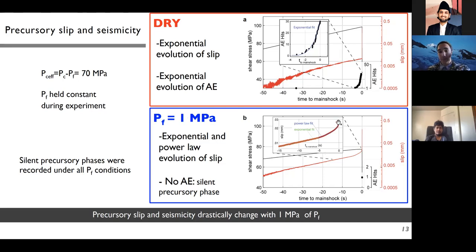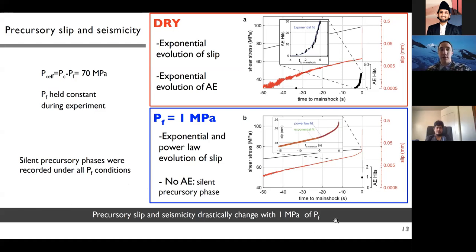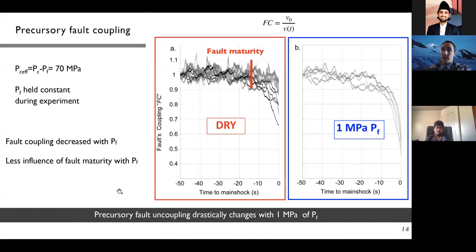In all experiments with pore fluid pressure, the precursory phase was silent — no acoustic emissions or foreshocks were recorded when pore fluid pressures were present; only the main shock was recorded. This shows that slightly changing the presence of fluids can drastically change precursory slip and seismicity preceding a main shock.